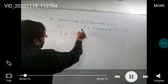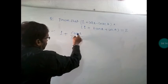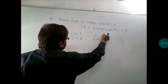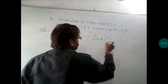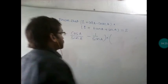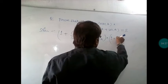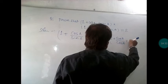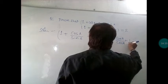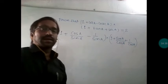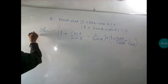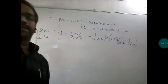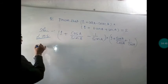Cot A can be written as cos A by sin A, and cosec A is equal to 1 by sin A. We will use these concepts here. Similarly, tan A can be written as sin A by cos A, and sec A can be written as 1 by cos A. So we have used the identities here. Now we will take LCM — the LCM in the first bracket is sin A.